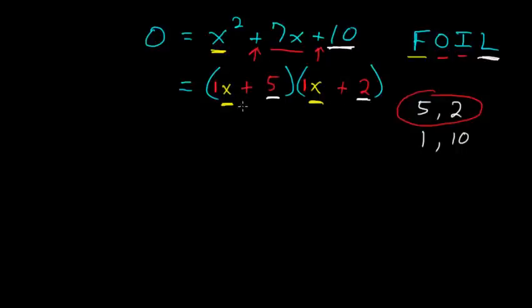And to know if you factored this correctly, what you could do is just re-multiply out these two binomials using the FOIL method, and you will get back this quadratic here.